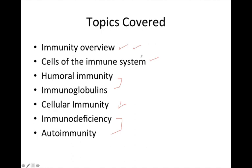First we'll talk about immunity, review the cells of the immune system, and then the very specific responses that are carried out. One thing to keep in mind: humoral and cellular immunity are specific immune responses carried out by different cells. Even though they're different responses, they are occurring simultaneously. So functionally they serve different purposes, but when we initiate the immune response, we're going to see a combination of both humoral and cellular immunity.